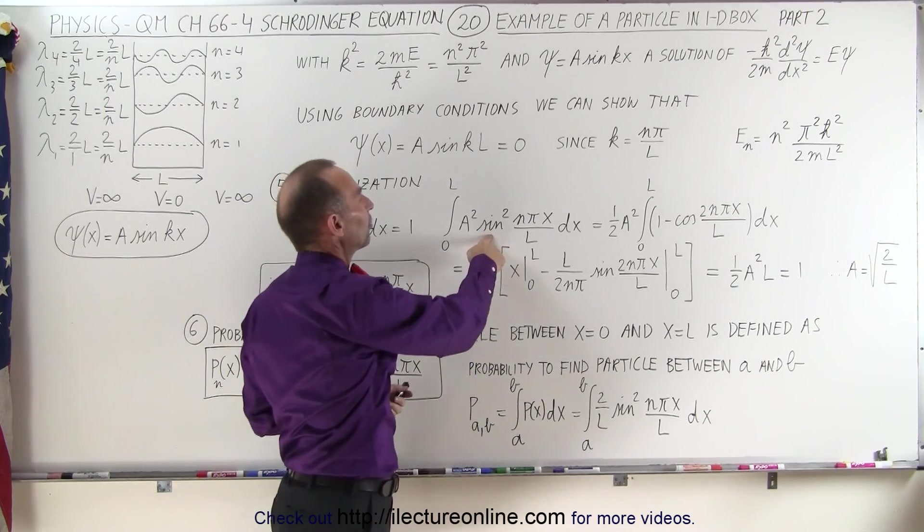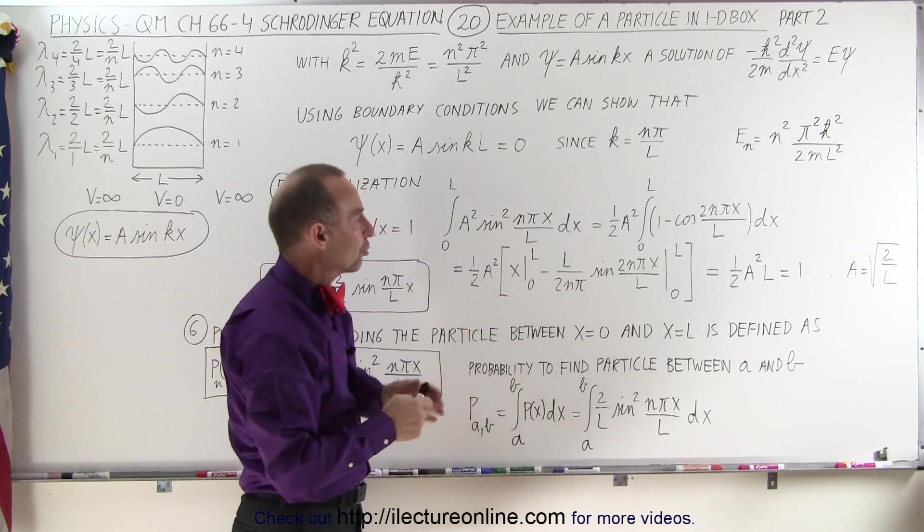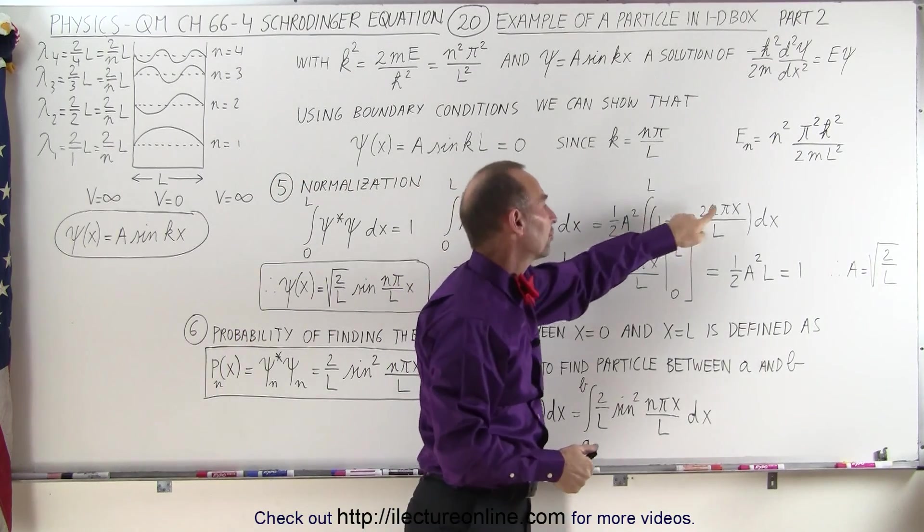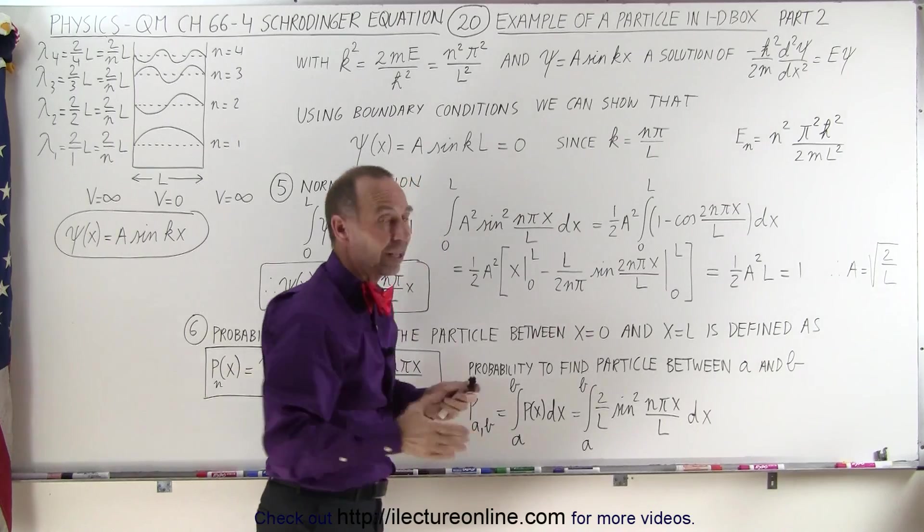Of course, integrating the sine squared, we can then find the trigonometric identity, which is one-half times one minus the cosine of twice the angle, and that's a lot easier to integrate.